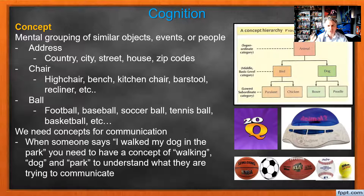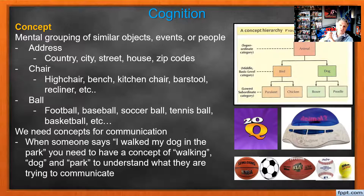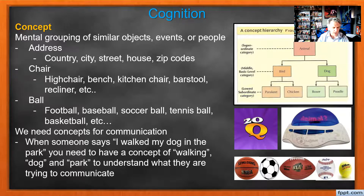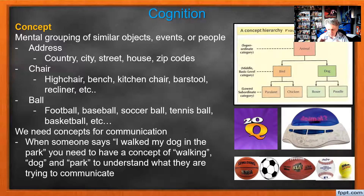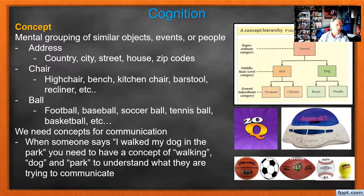If somebody mentions 'here's my address,' we all have a concept of what an address is — it's a number on a house or business, on a street, with a zip code. The odd numbers are on one side of the road, even numbers on the other. We all have a concept of that, or else the mail couldn't be delivered. If somebody says 'I'm sitting on a chair,' we all have a general concept of what a chair is, even though a chair could be many things — a barstool, a box, a sofa.